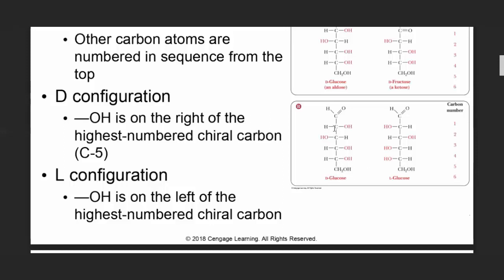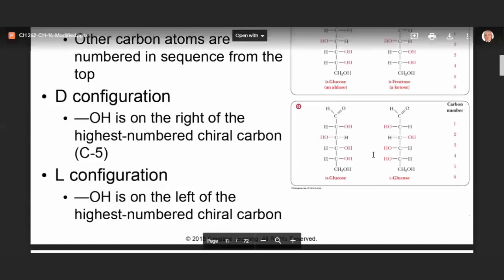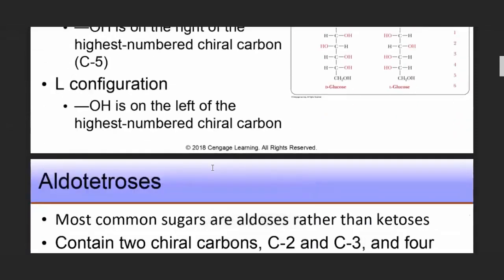In D-glucose, how many chiral carbons do we have? One, two, three, four. The highest-numbered chiral carbon — we look at the OH. OH to the right: D. OH to the left: L. This is the so-called configuration.